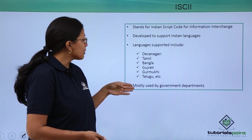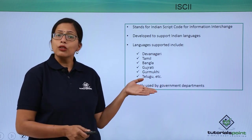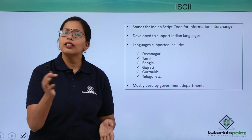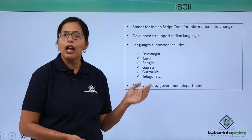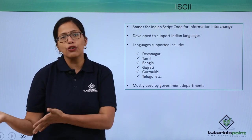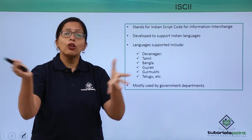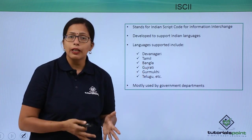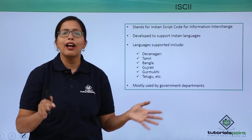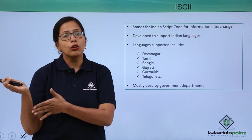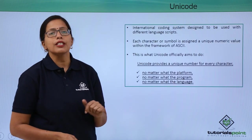ISCII has been mostly used by government departments. This also means that all other countries in the world who have their own languages will need alphanumeric codes different for each of their needs. If all these people gather together their documents, there will be an overlap because all of them have their own individual coding. So to overcome this, Unicode was developed.